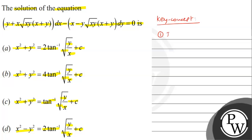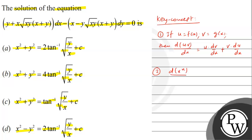The product rule: if u and v are both functions of x, then d(uv)/dx = u·(dv/dx) + v·(du/dx). The power rule: d(xⁿ)/dx = n·x^(n−1). The derivative of tan⁻¹(x) with respect to x is 1/(1+x²).